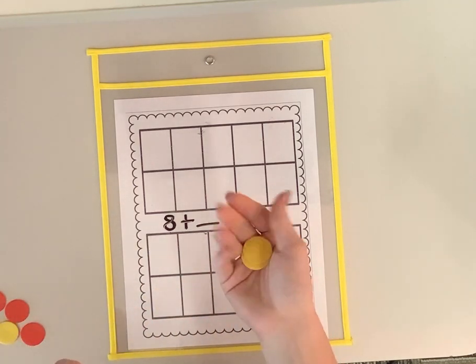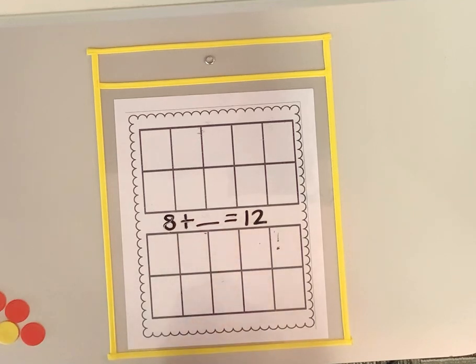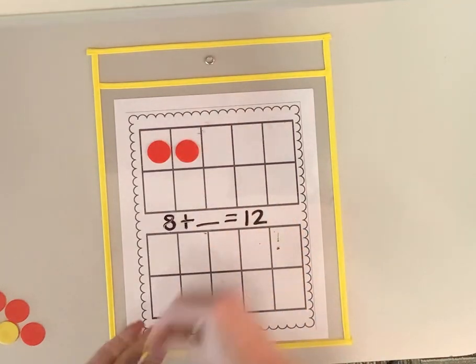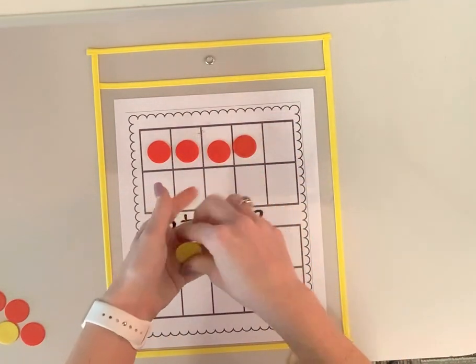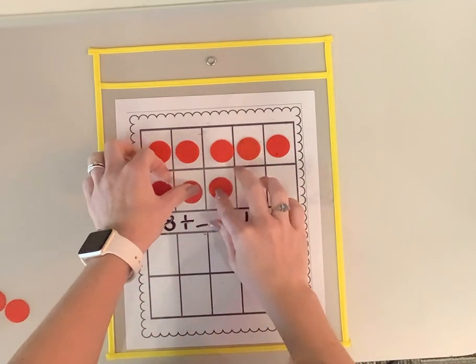I'm going to use my double sided counters to help me figure out my missing number. I'm starting with eight. So I'm going to put eight red counters down. There's eight.